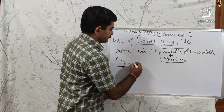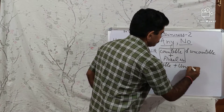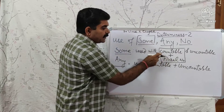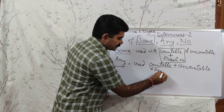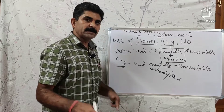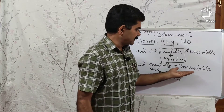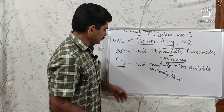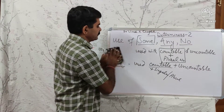Then we have ANY. ANY can also be used with both countable and uncountable nouns. The difference is that with SOME, countable nouns must be plural, but with ANY, countable nouns can be singular or plural — 'any boy' or 'any boys.' Uncountable nouns always take singular with both SOME and ANY.